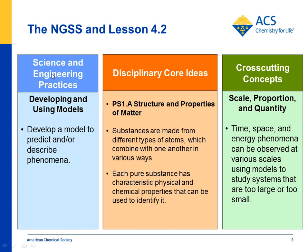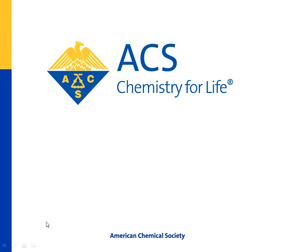If you look at the foundation box for Science and Engineering Practices, it says: 'Develop a Model to Predict or Describe Phenomena.' What students do here is try to understand the periodic table and atoms on a level where they'll eventually be able to develop a model to understand how atoms join together to make molecules. For disciplinary core ideas, substances are made of different types of atoms — everything in Chapter 4, including Lesson 4.2, is intended to help students see why atoms join together to make molecules. For cross-cutting concepts, scale, proportion, and quantity: students are looking at a very small scale within the atom to understand another scale — atoms joining together to make molecules. Thanks for watching, and good luck with the lesson.